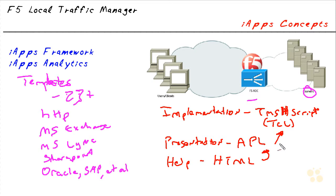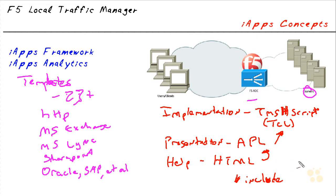So we have three completely different languages bringing all of this together. While templates may get large and complicated, the TCL and APL portions can both do include files — similar to how we do it in C, C++, or Pascal. This gives you the ability to reuse code between templates, which may ease your deployment and allow you to reuse things you either find or develop yourself — making these a little bit smaller and more manageable.